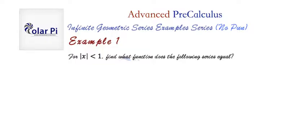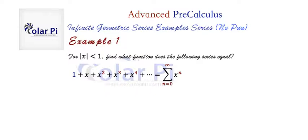So for absolute value of x is less than one, find what function the following series equals. So the series is 1 + x + x² + x³ + x⁴ + ... which using sigma can be written as the sum from n=0 to infinity of x^n, right?